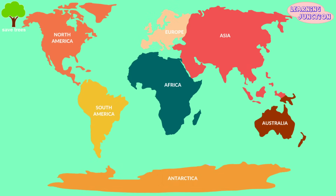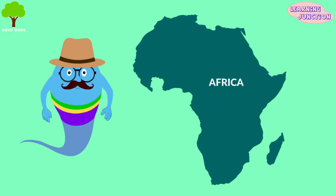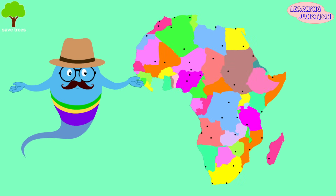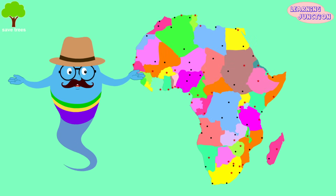You can easily see which country or continent is in which direction. Different places are shown with different colors, so we can easily locate a particular continent. Usually countries are shown by dots and capitals with a star.